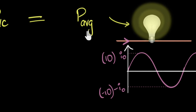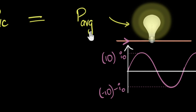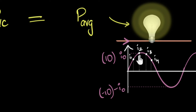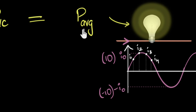We calculate the average just like we always do. Since the current is changing, at every point there is some value for current and therefore some value of power. So we add up all those power values and divide by n to get the average power. At each marked point, the power would be I₁²R, I₂²R, and so on — add them up and divide by n. Try to equate that to the DC power and see what expression you get for I_DC.